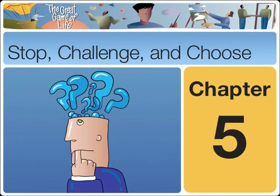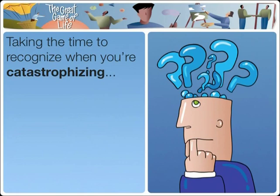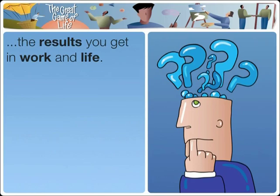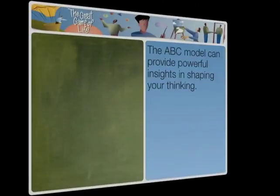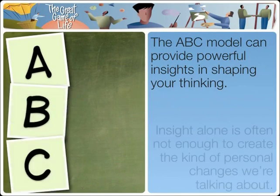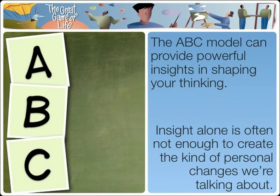Here's an insight we've discovered over the years working with the ABC model. Just taking time to recognize when you're catastrophizing, recognizing thoughts that start with either/or or should, can make a significant difference in how you think, how you feel, how you interact with people, and ultimately the results you get in work and life. And the ABC model can provide powerful insights in shaping your thinking. Yet insight alone is often not enough to create the kind of personal changes we're talking about. And that's why we all need thinking tools.